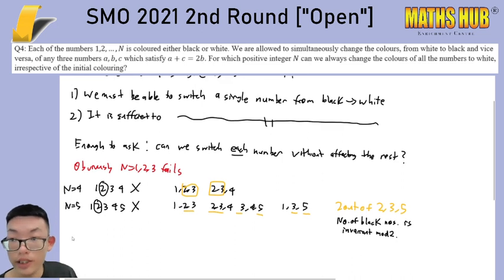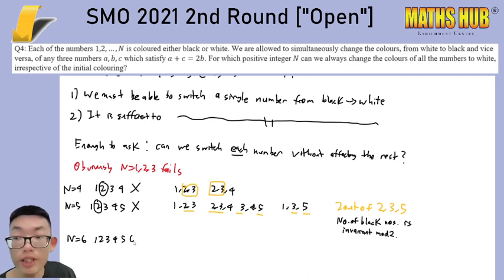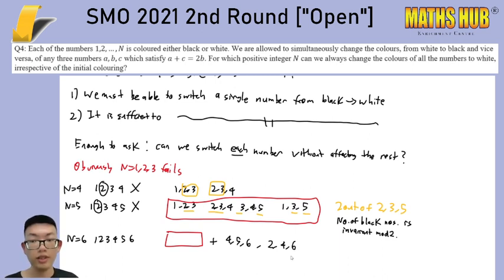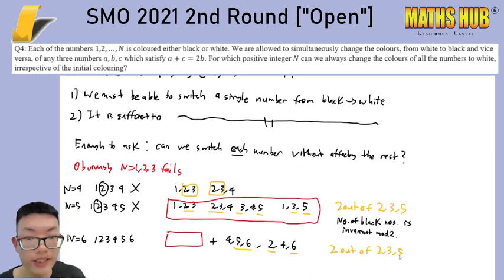Let's say that we continue down to n equals to 6. For n equals to 6, it's just this list of numbers plus you have 4, 5, 6 and you have got 2, 4, 6. Now it is actually going to be 2 out of 2, 3, 5, and 6 that will always be swapped together. So 6 still doesn't work.